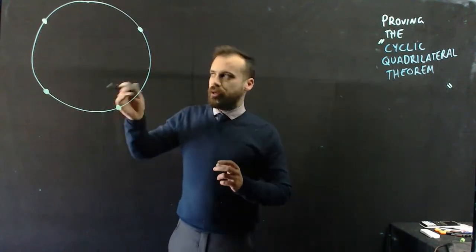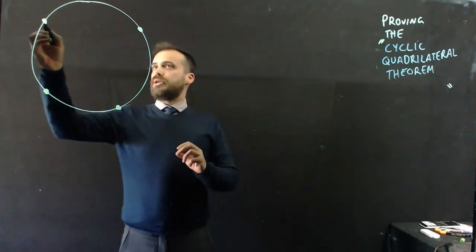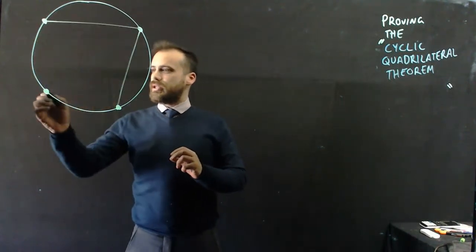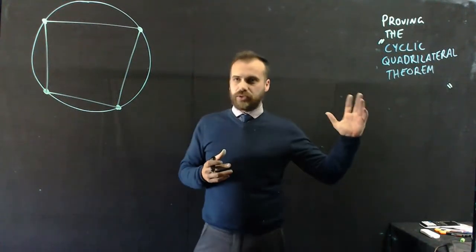Now let's take a look at what that looks like. So take a circle, that's our cyclic bit, put four dots on it anywhere you like around the outside, join them up, and what you've created is a cyclic quadrilateral.